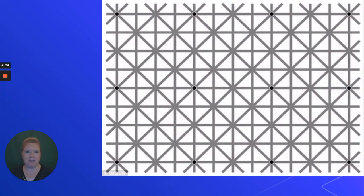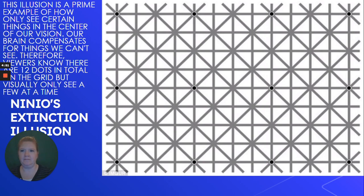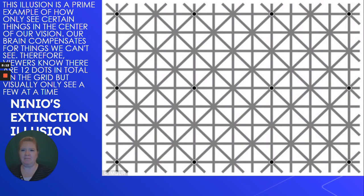Look at this one — there are dark dots in the center. Take a minute and look: how many dark dots can you see? This is Ninio's extinction illusion. There are 12 dots in total. It's very difficult to see all 12 at the same time. We typically only see a few at a time because we focus on things in the center of our vision, so we don't see all the other things at the same time.